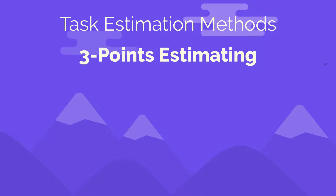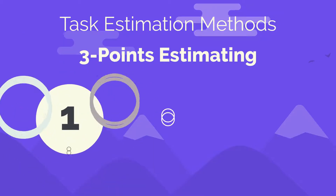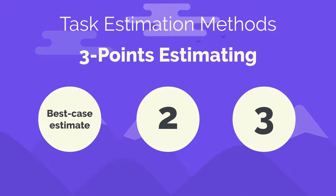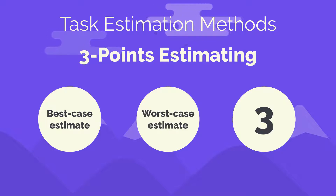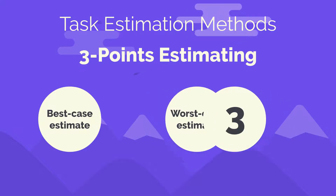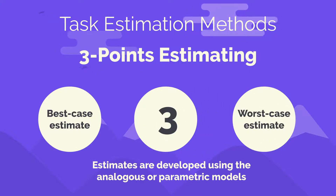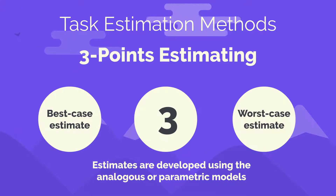Three-point estimating. In this technique, three estimates are generated for a project activity using three different sets of assumptions. The first estimate is a best case estimate, the second is a worst case estimate, and the third lies somewhere between the other two. These estimates are developed using one of the previous techniques, such as analogous or parametric model.